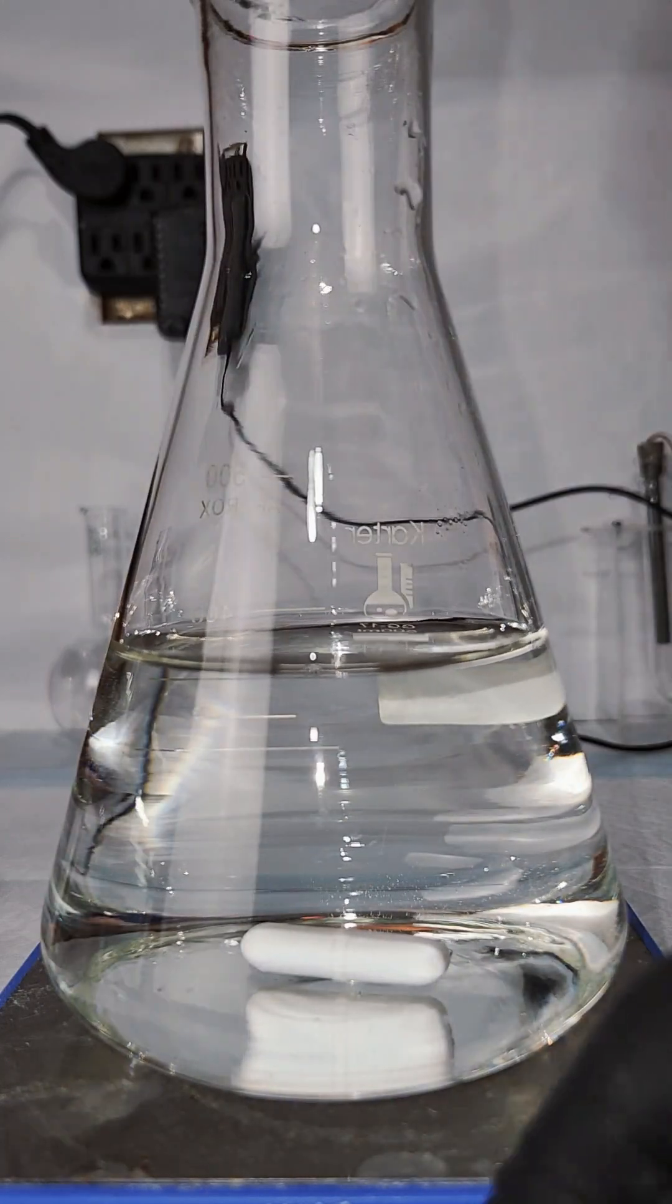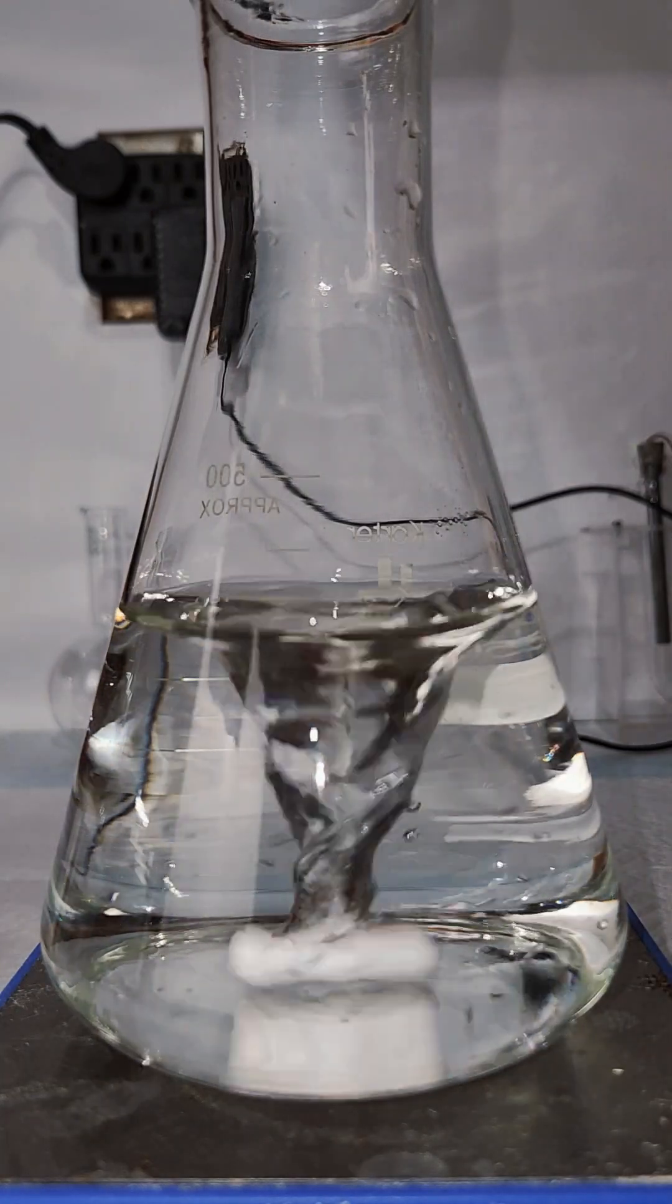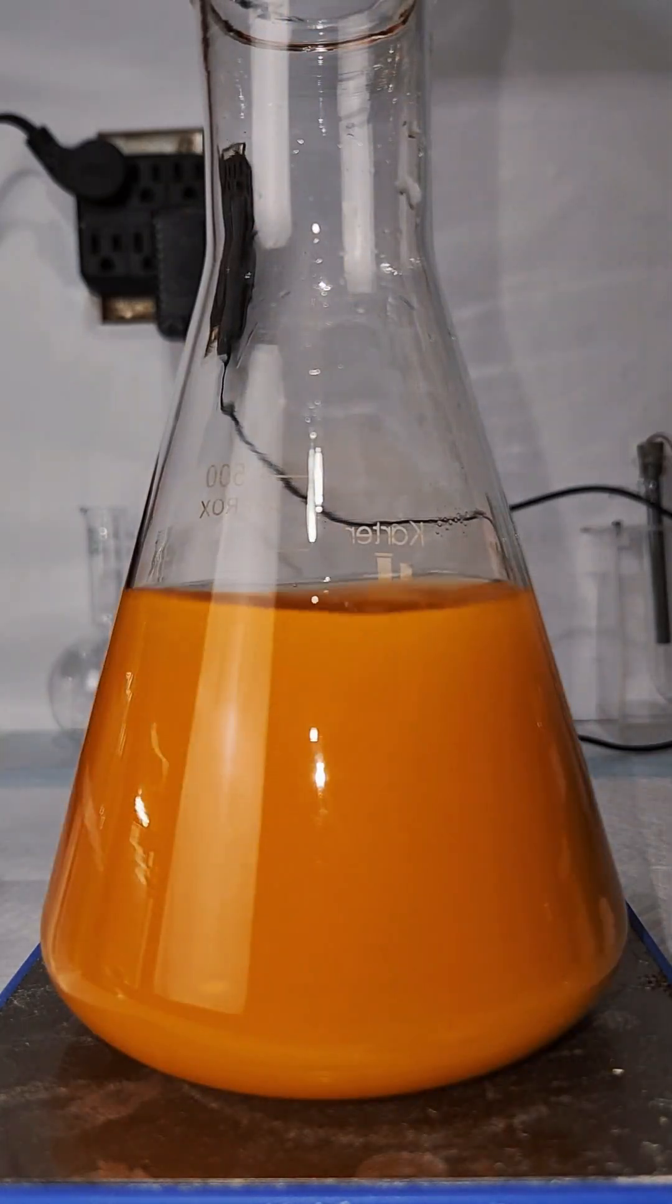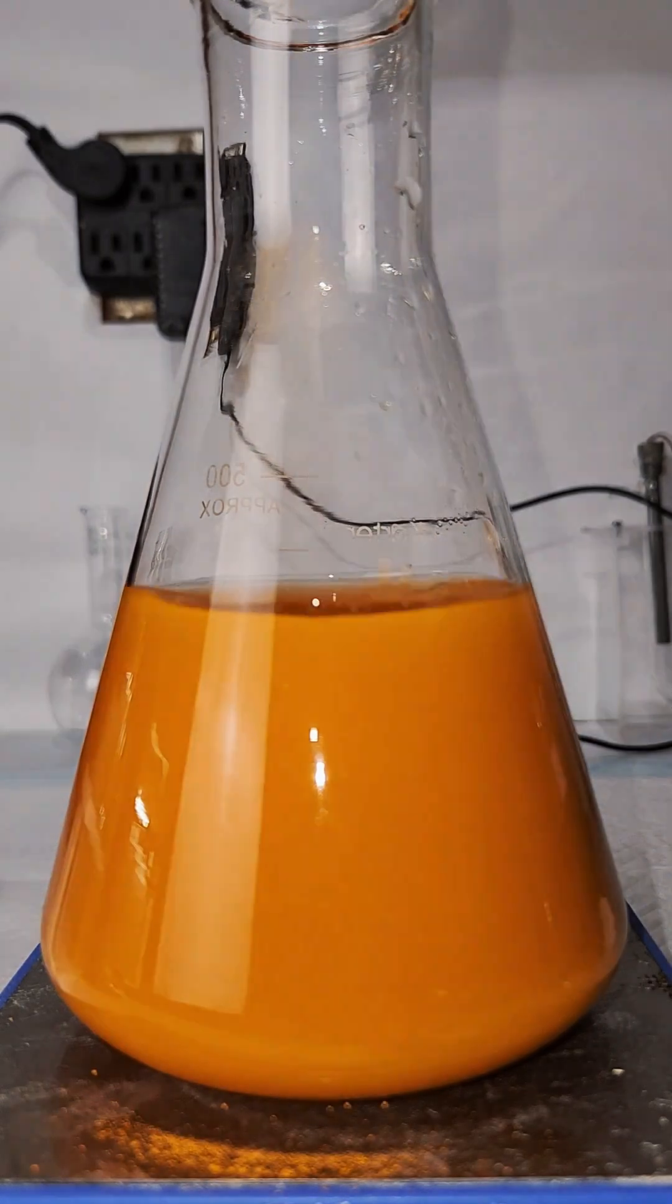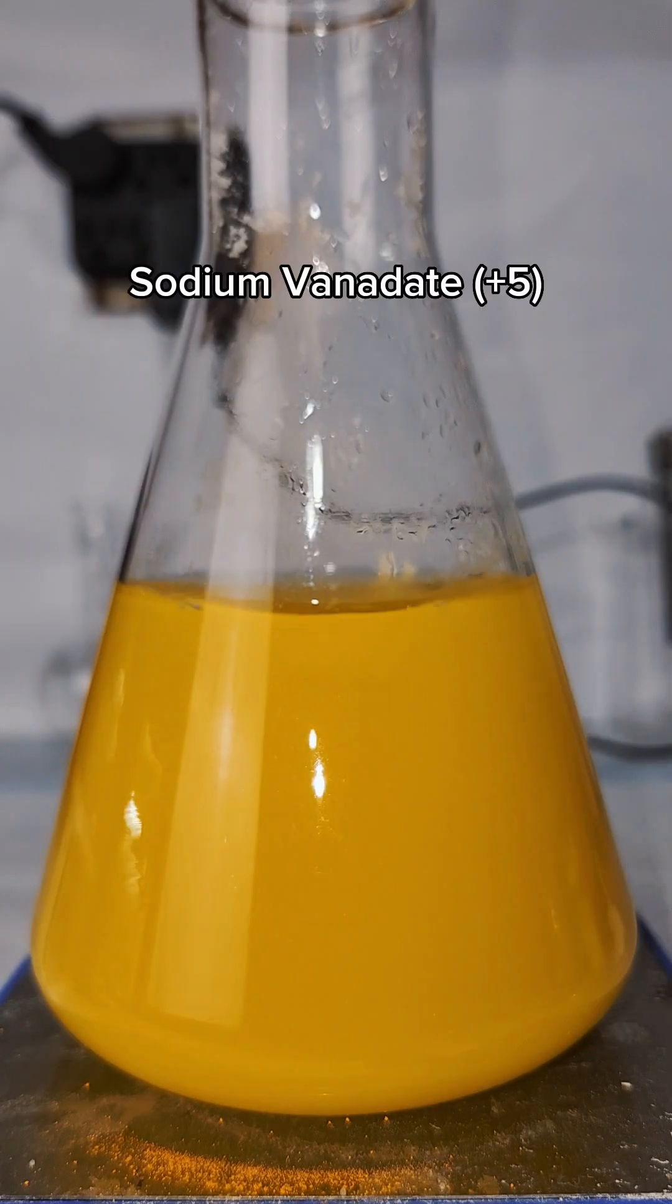This is transferred to an Erlenmeyer flask and then dissolved in a stoichiometric quantity of sodium hydroxide to form sodium vanadate. I then add sulfuric acid to bring the pH down to 2, forming vanadyl sulfate, which is also in the plus five oxidation state.